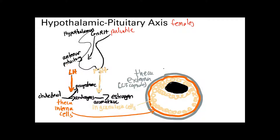Starting with LH in females: similar to how LH acts on Leydig cells in males to make testosterone, in females LH acts on the theca interna cells. The theca interna cells sit inside the follicle of the ovary, beneath the theca externa, which is a connective tissue capsule. Under LH stimulation, the theca interna cells take cholesterol and turn it into androgens and progesterone.